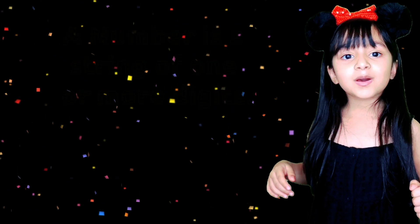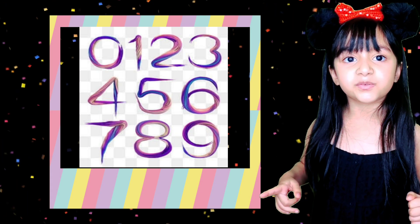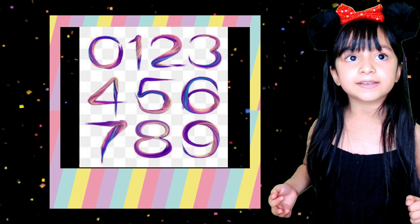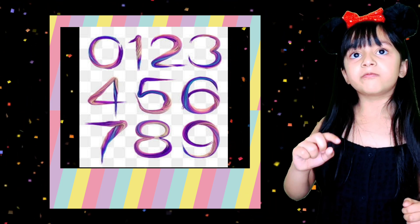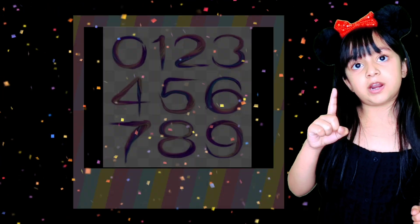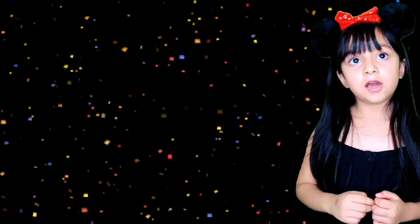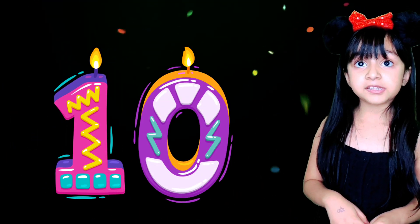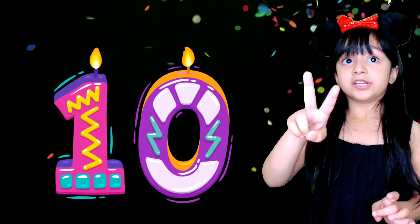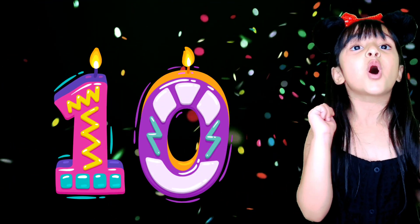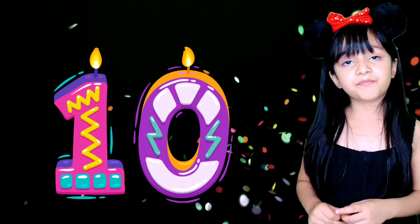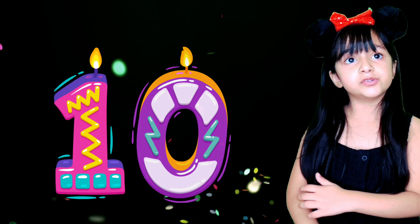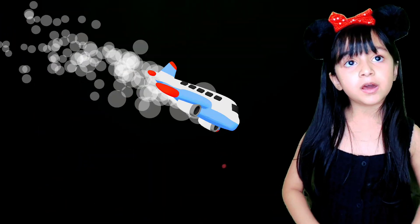Look at the numbers from 0 to 9 — they're all one digit numbers. Now look at the number 10. Number 10 has two digits: digit 1 and digit 0. It's the first two digit number.